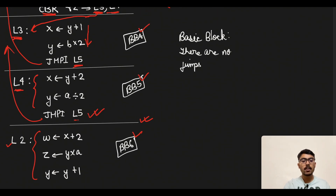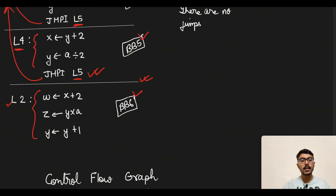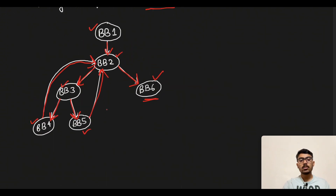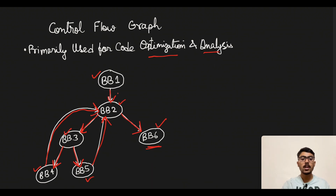In BB5 as well, the last statement is a jump immediate going to L5, which is BB2. So we mark that arrow from BB5 to BB2. Finally, BB6 marks the end of the code — there is no further code after this, so there is no outgoing arrow from BB6.